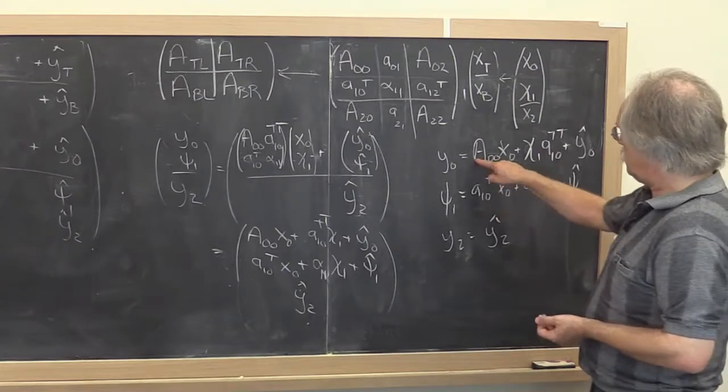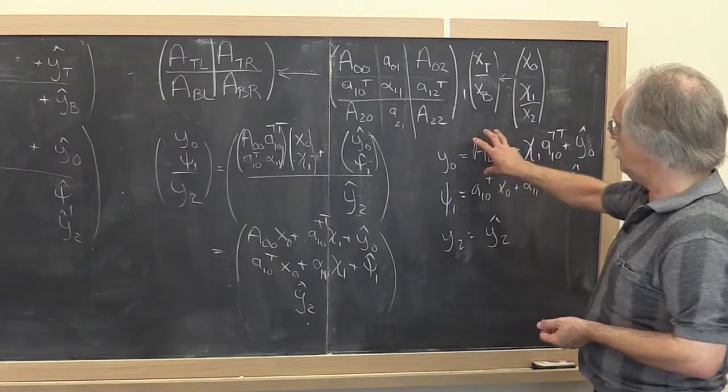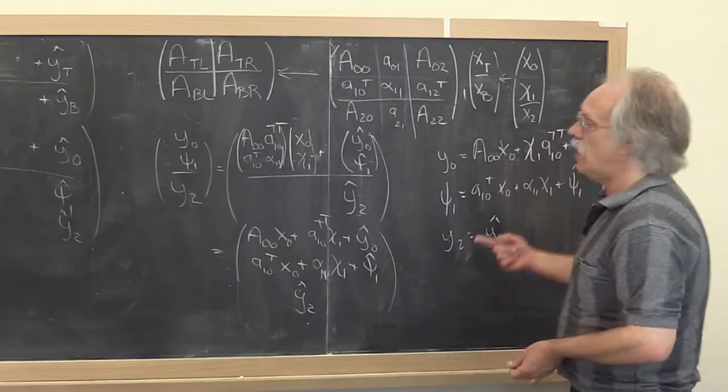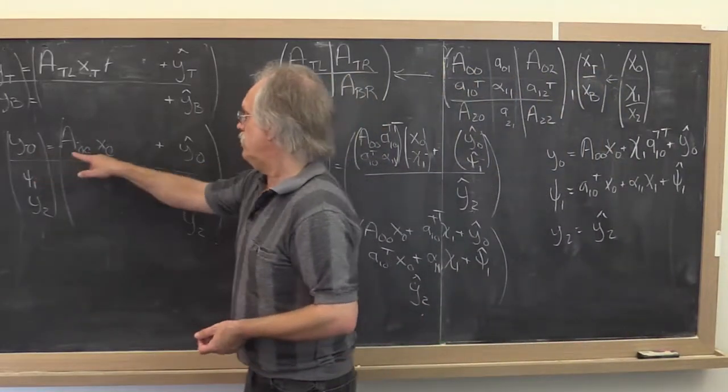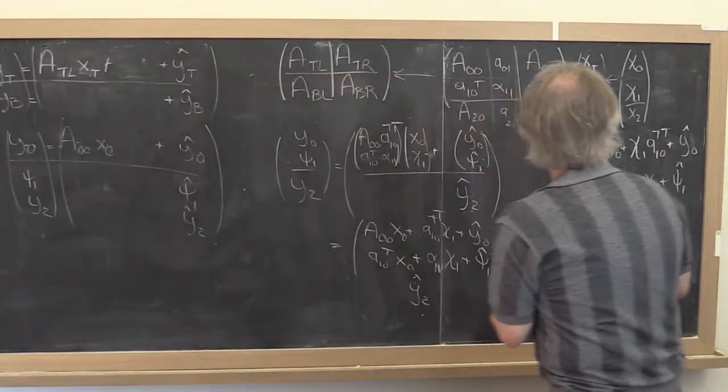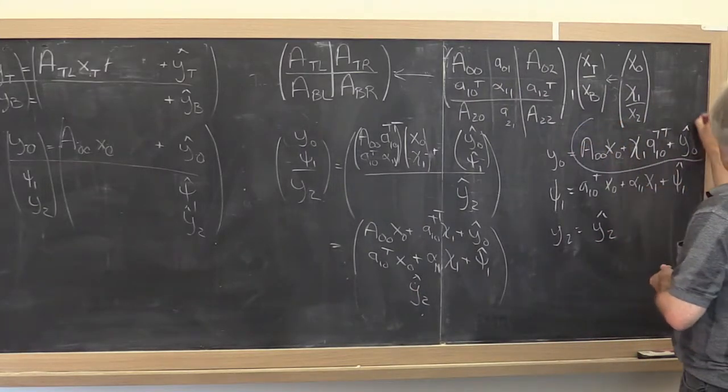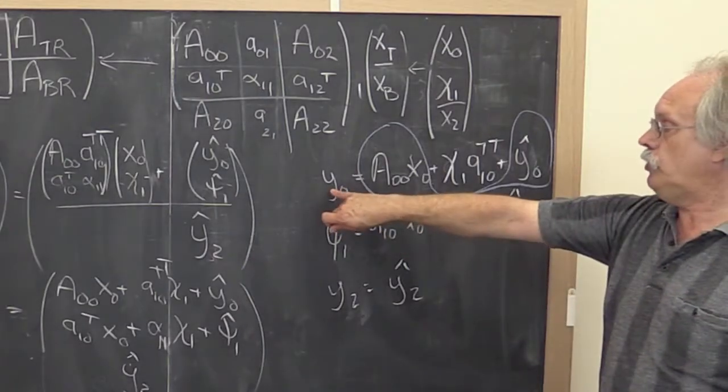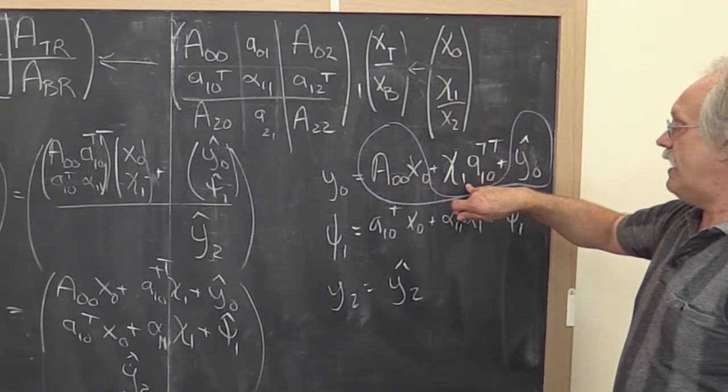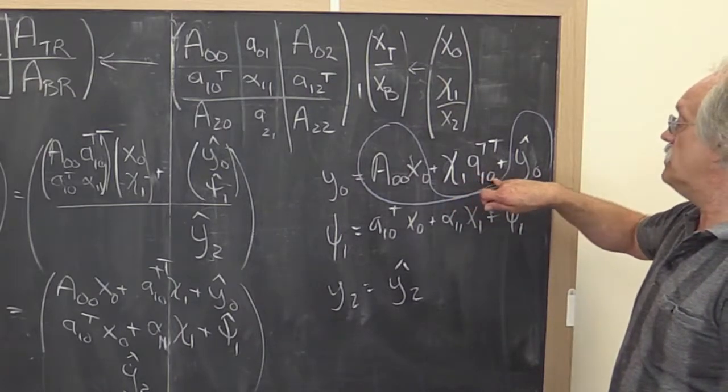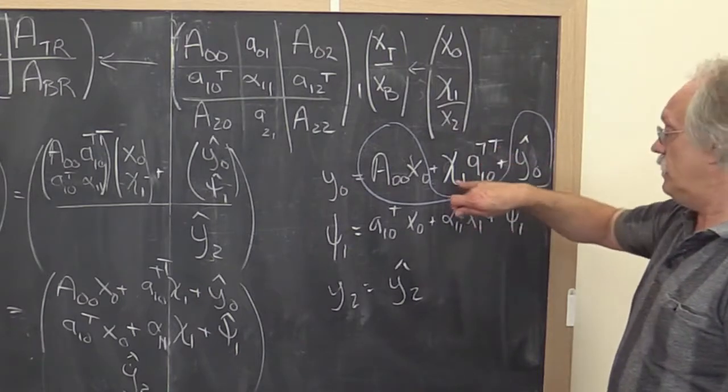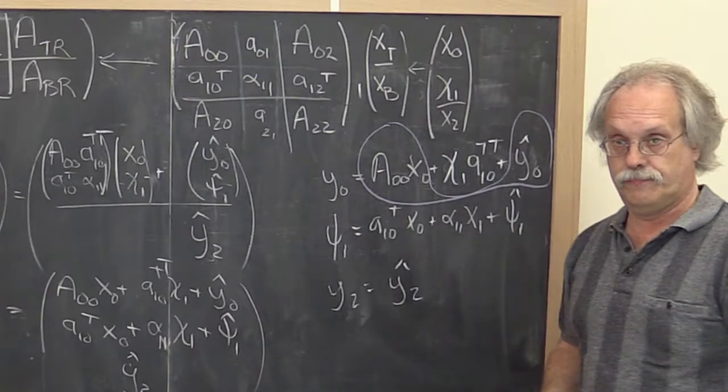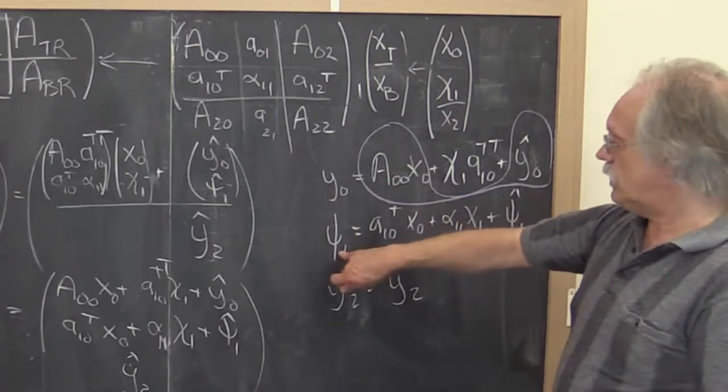Now, we don't want to go and compute all of this because then we would be computing again with a part of the matrix with which we already have computed before. What we do instead is we say, oh, y zero already contains this times that. That's this part right here. So all you need to do is update y zero by adding chi one times a one zero transpose transpose to it. Oh, that's a scalar times a vector added to a vector that's an axpy operation.